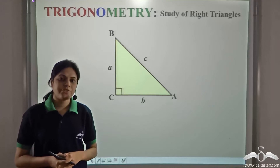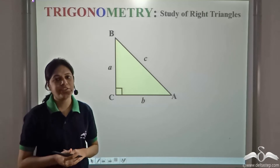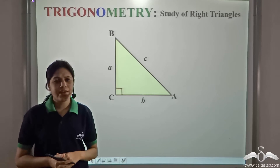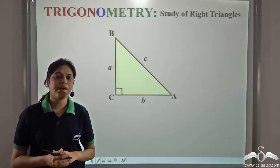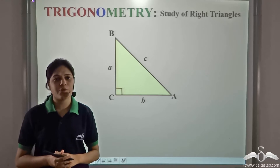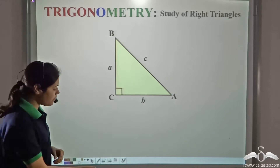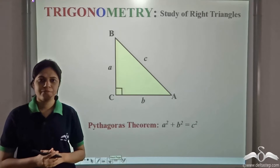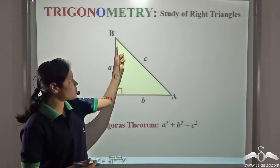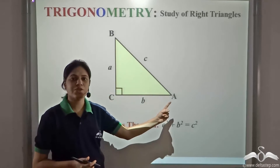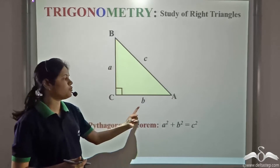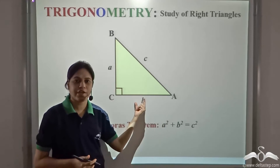Trigonometry is the study of right triangles, or right angle triangles. As soon as I say a right angle triangle, what is the first thing that comes to your mind? Is it the Pythagoras theorem? Yes. Pythagoras theorem states that the square of the hypotenuse is equal to the sum of the squares of the other two sides in a right angle triangle.